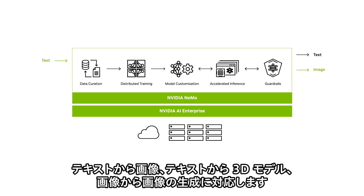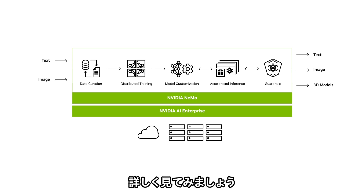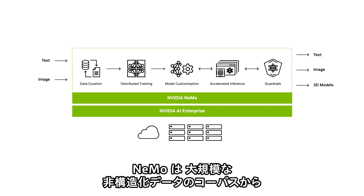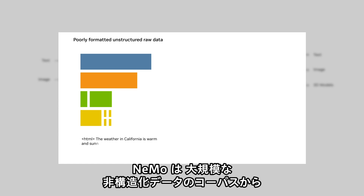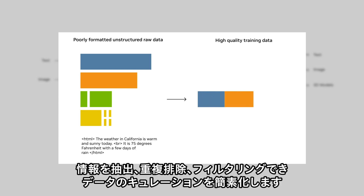The framework also supports multi-modality including text-to-text, text-to-image, and text-to-3D models, and image-to-image generation. Let's take a closer look. NEMO simplifies data curation by extracting, deduplicating, and filtering information from a large corpus of unstructured data at scale.